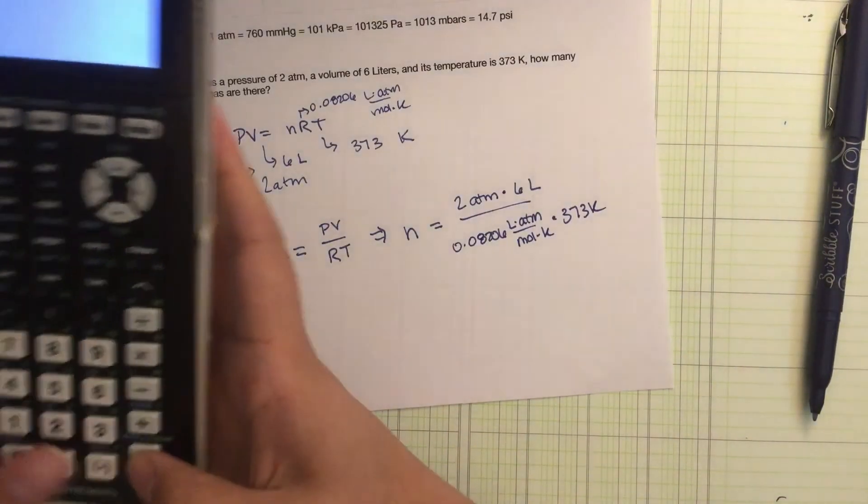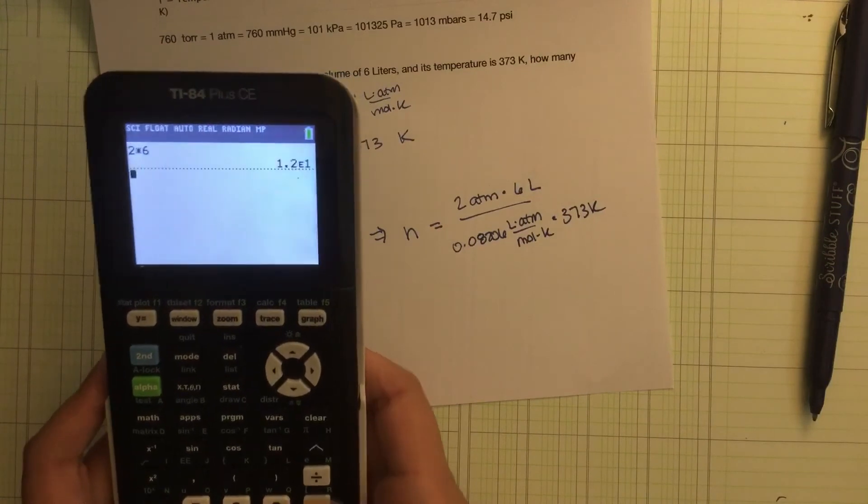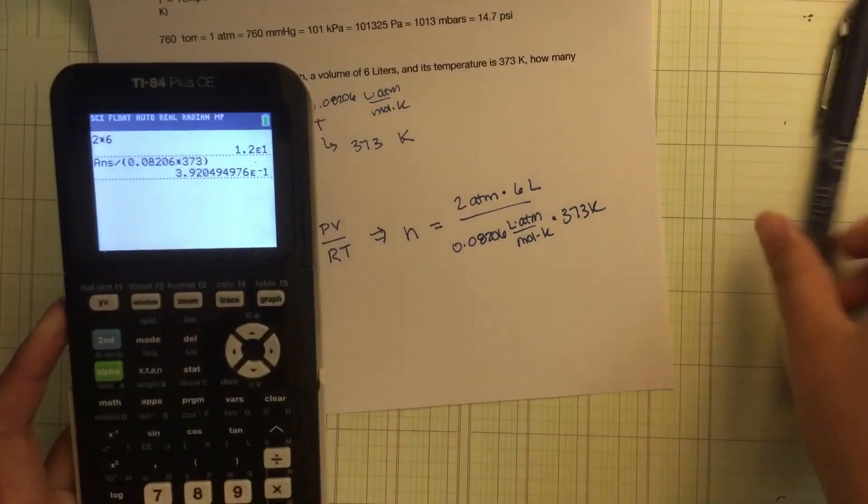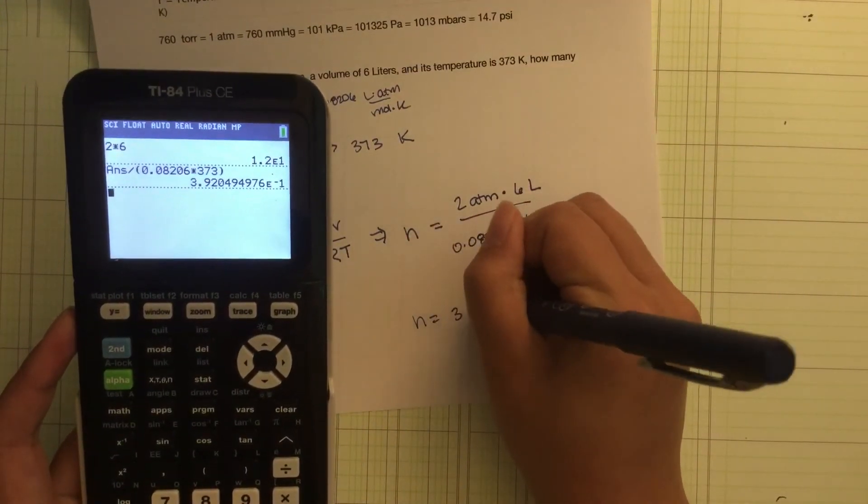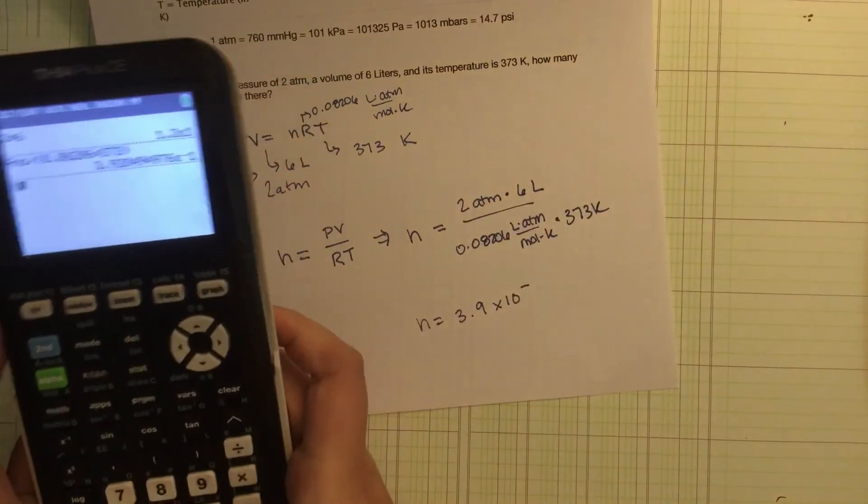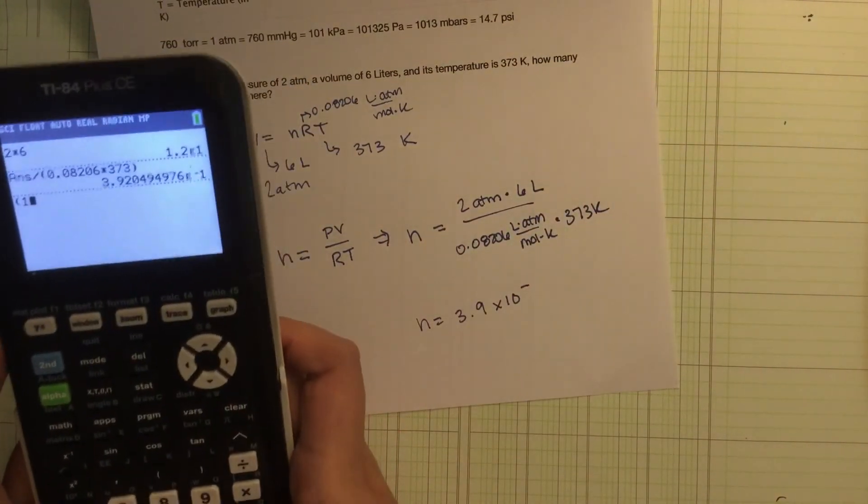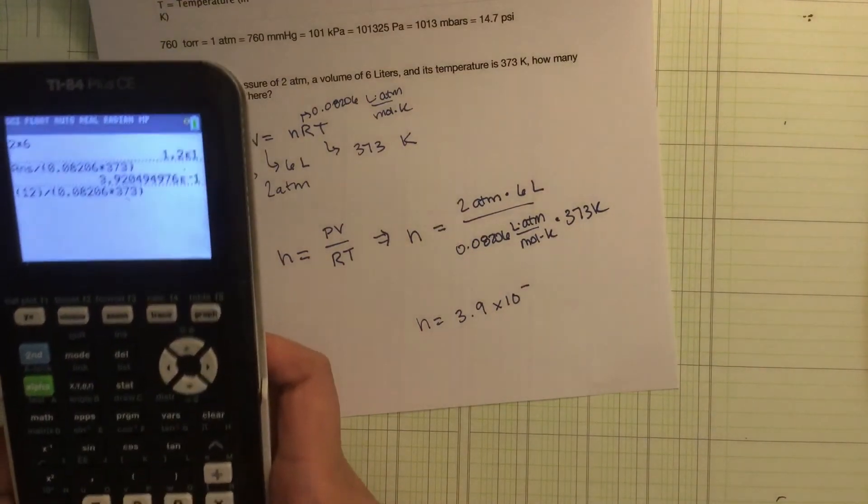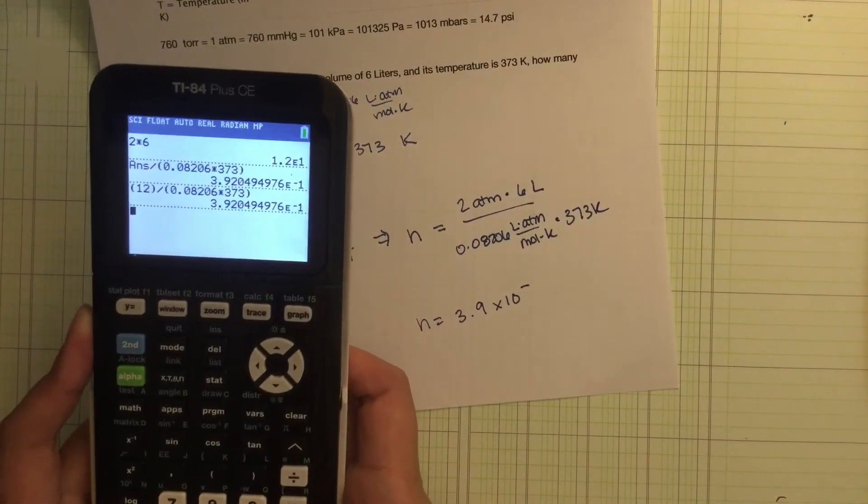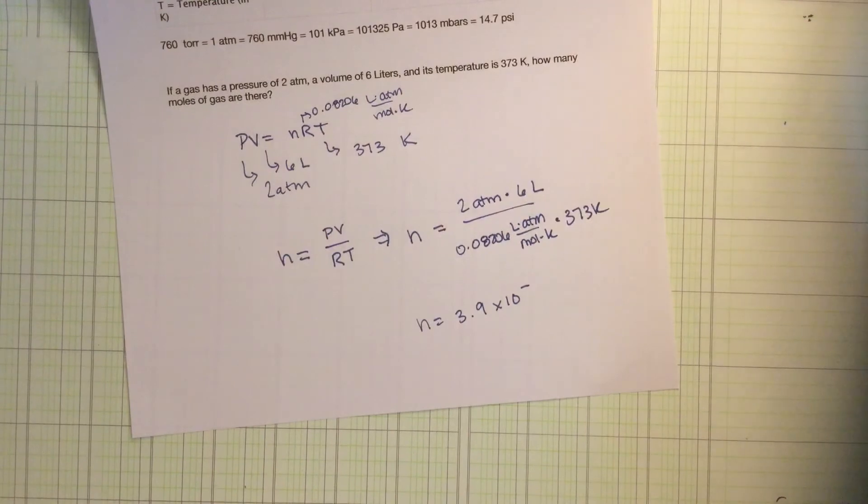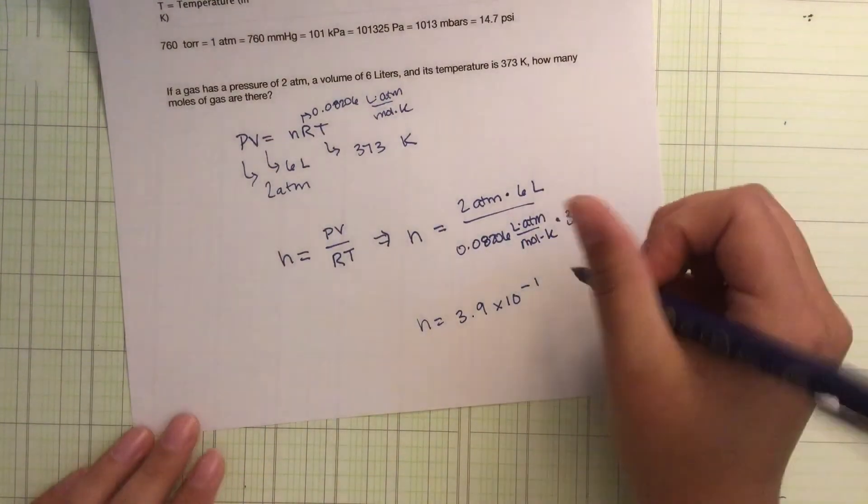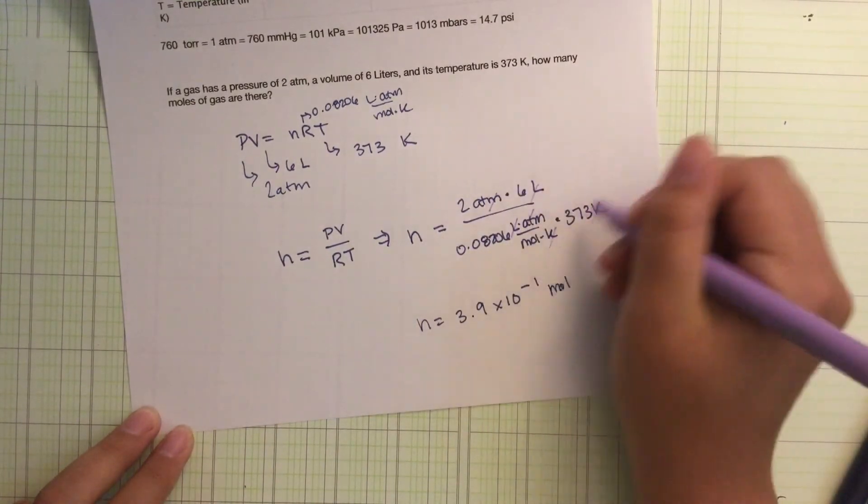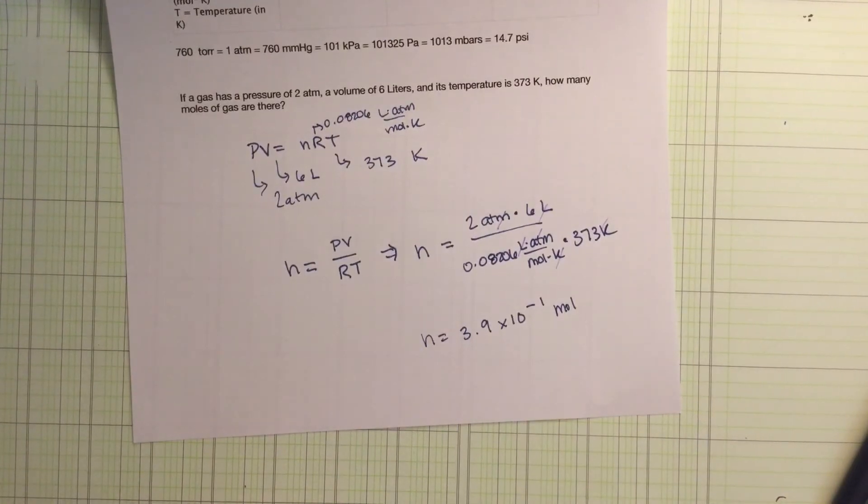So let's put that on the calculator. So 2 times 6 divided by 0.08206 times 373. We get n is equal to 3.9 times 10 to the negative 1. If we could check that, so we could say 12 divided by 0.08206 times 373. And we get the same answer. And what we see is what we're left with is moles because we've canceled out ATM, canceled out liters, and canceled out Kelvin.